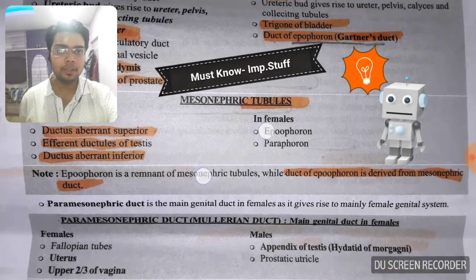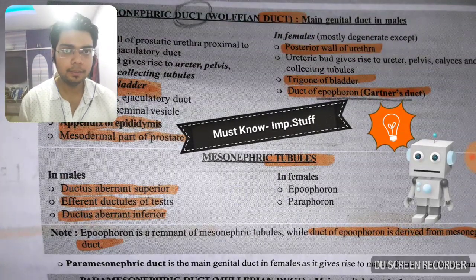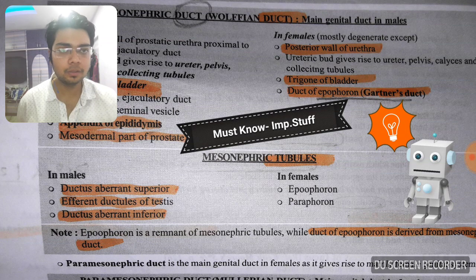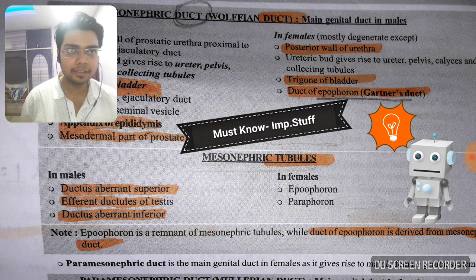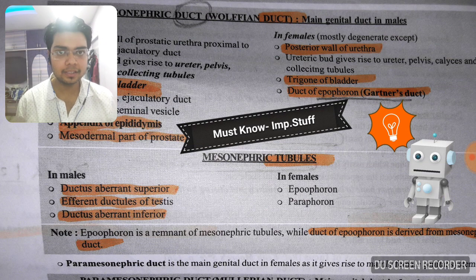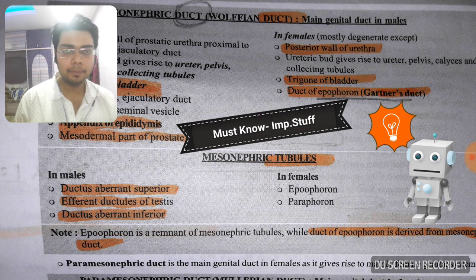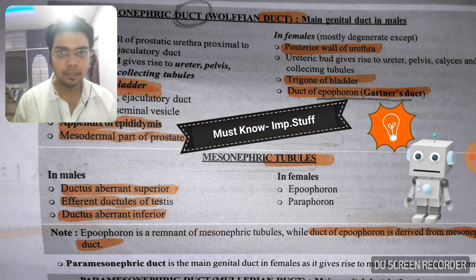We have two main ducts: the mesonephric duct and the paramesonephric duct. The mesonephric duct is the main genital duct in case of males, while the paramesonephric duct is the main genital duct in case of females. We must know what parts are developed from each of these ducts.